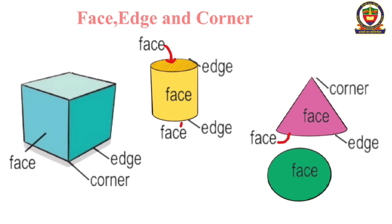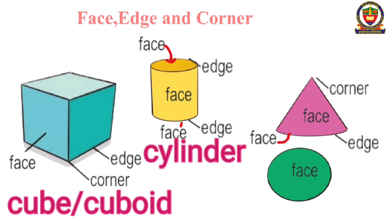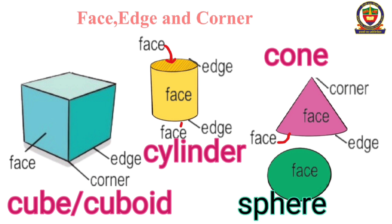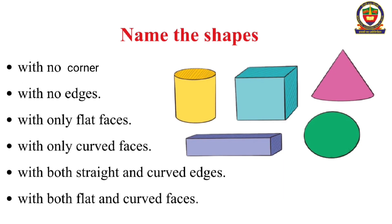Let us see how many faces, edges and corners they have. A cube or cuboid has six faces, twelve edges and eight corners. Cylinder: three faces, two edges and no corners. Cone: two faces, one corner, one edge. A sphere: one face, no edges, no corners.